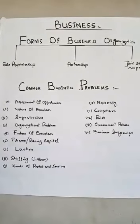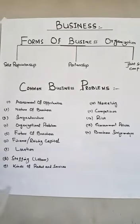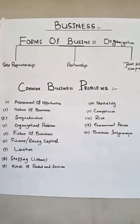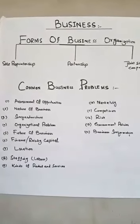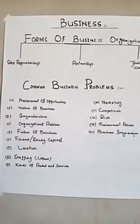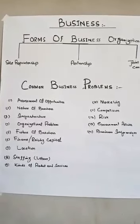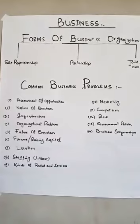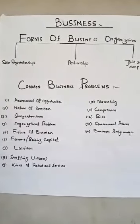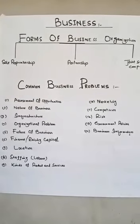It's very important to know what business actually is. Business is defined as an organization that is engaged in commercial, industrial, and professional activities. Or we can say that business refers to organizing all the activities of individuals to produce and sell goods and services to earn profit.